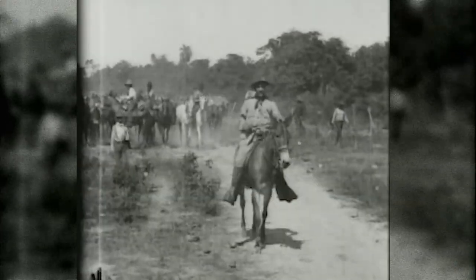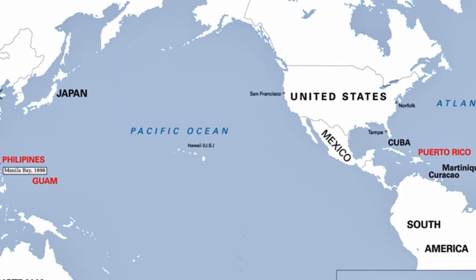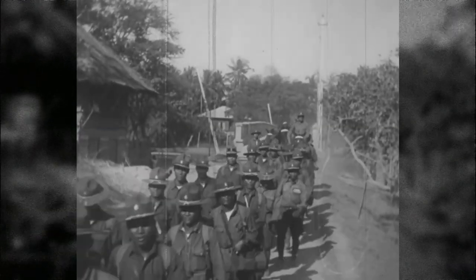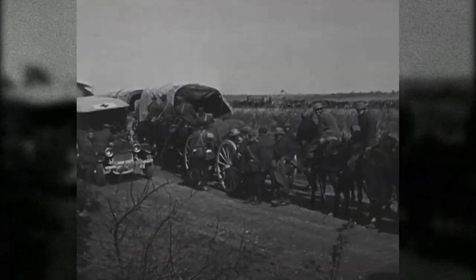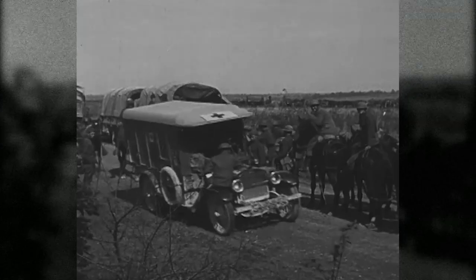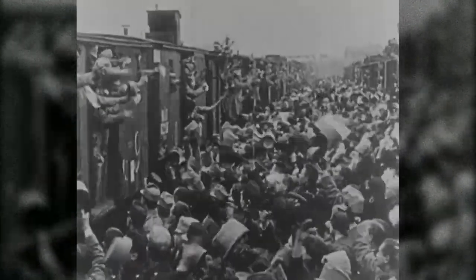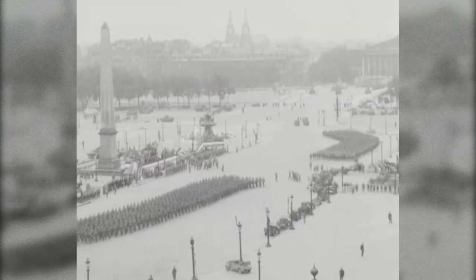In 1898, the United States declared war on Spain and Congress authorized an increase in the Army's size by 250,000. After a quick victory, the United States acquired Guam, Puerto Rico, and the Philippines. Soldiers were now needed to guard and protect these new American territories. With approximately 150,000 soldiers when the United States entered World War I in April 1917, the Army would expand to over 4 million by the end of the war in November 1918, with over 2 million soldiers transported to France.